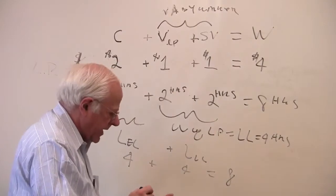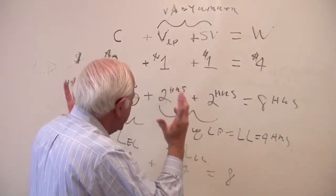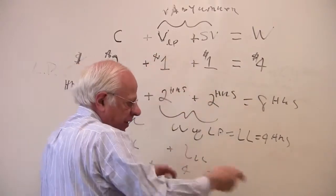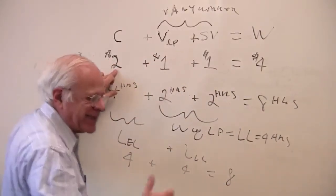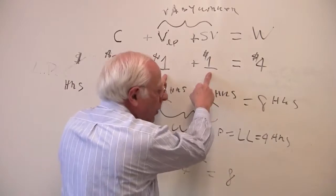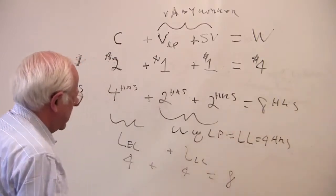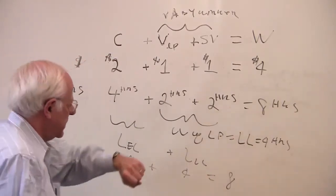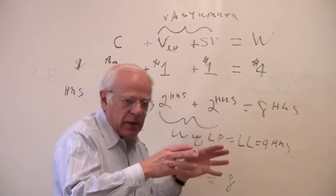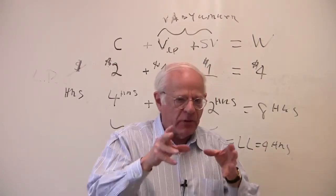Why variable? Because this particular input varies in value — it produces two dollars, a dollar more than what it costs. It varies in value. Constant capital merely adds its value to the cost of the apple, but variable capital adds more than it costs the capitalist in production. So Marx has established here that the source of new value — this surplus value — arises outside exchange.